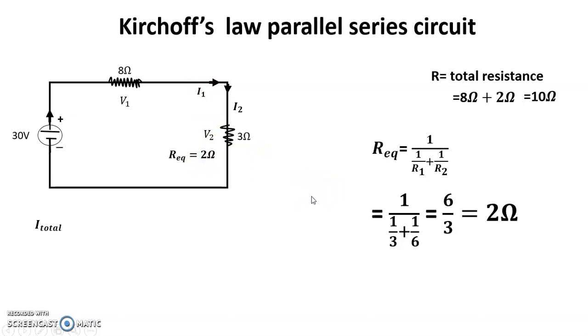So I_total equals V/R, this is Ohm's law. So we get 30 divided by 10 equals 3 amperes. And V1 equals 8 times 3 equals 24 volt.